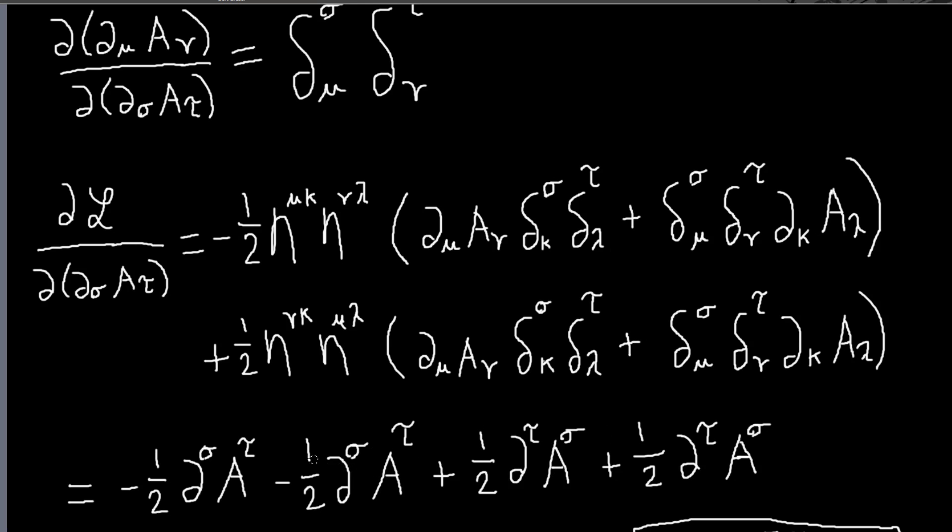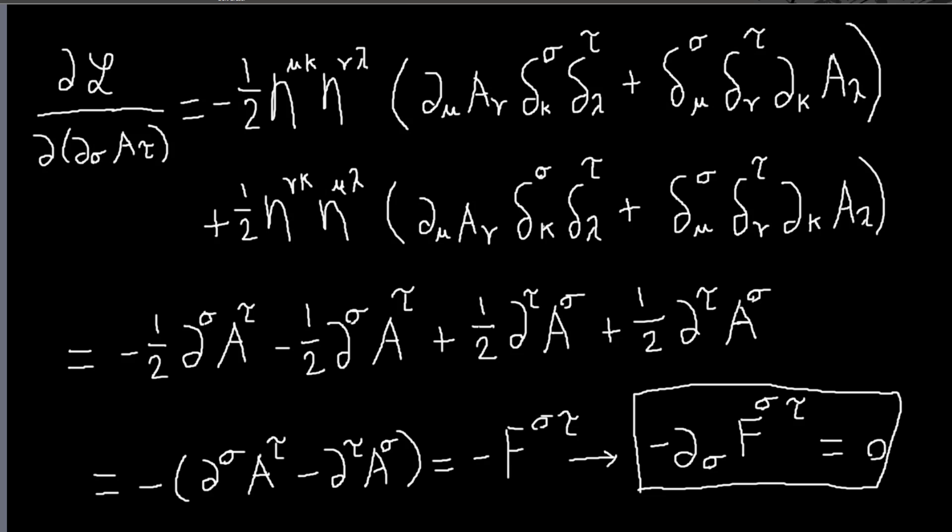Okay, so these two terms give the same thing. And then these two terms will give not d sigma a tau, but d tau a sigma, if you work it out. And so we'll have, so these four terms give these four terms. These two are the same. These two are the same. So the one-halves will go away. Okay, and so I end up with, I'll write it as, so I still have this minus sign. So I'll write it as minus d sigma a tau minus d tau a sigma, which is just negative f sigma tau, right? This was the definition of, yeah.